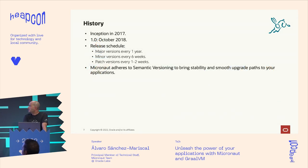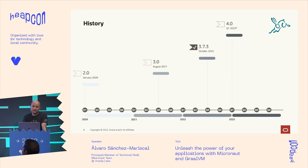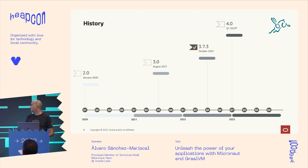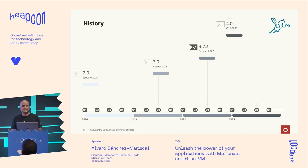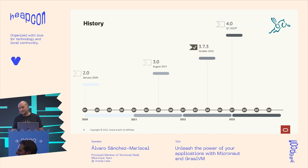We started in 2017 and we are now at version 3.7. We're planning to release Micronaut 4 next year with a Java 17 baseline. Today, Micronaut 3 supports Java 8 — is anybody still using Java 8? It's time to upgrade.